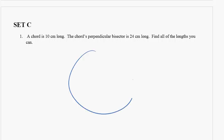So we have a circle. We have a chord which is 10 centimeters long. The chord's perpendicular bisector is 24 centimeters long. So that means the chord that bisects our original chord and is perpendicular. Well if this original chord was 10 and it's now being bisected, we know this is 5 and this is 5. We know this whole length here is 24.